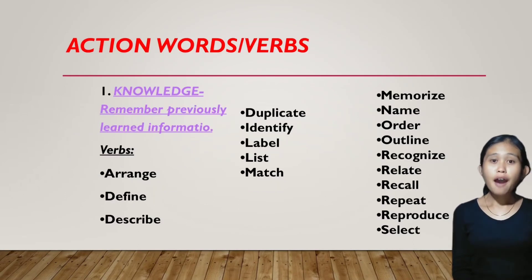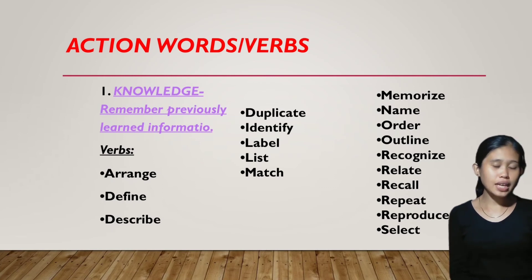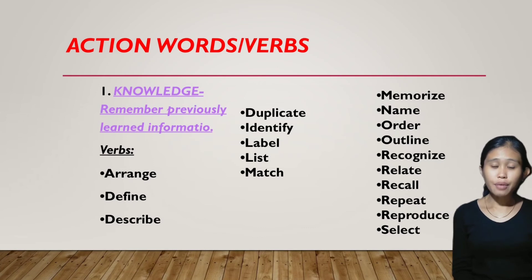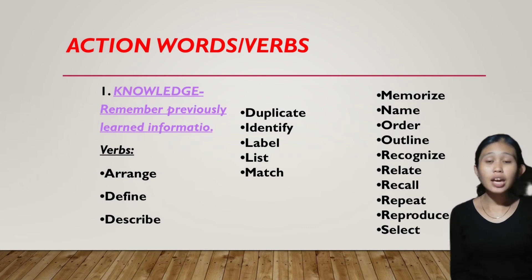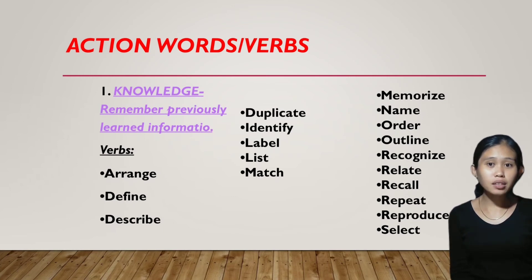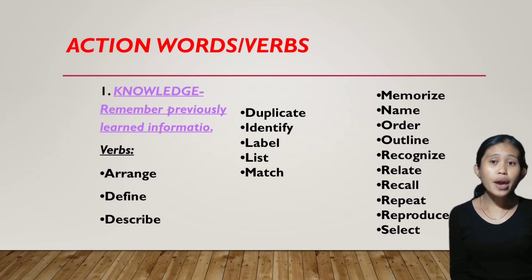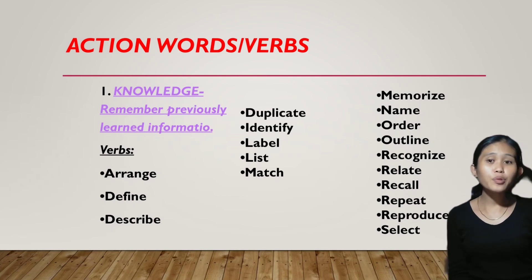Here are some action words or verbs from the six major categories of the cognitive domain. For number one, knowledge — remember previously learned information — the verbs are: arrange, define, describe, duplicate, identify, label, list, match, memorize, name, order, outline, recognize, relate, recall, repeat, reproduce, and select.